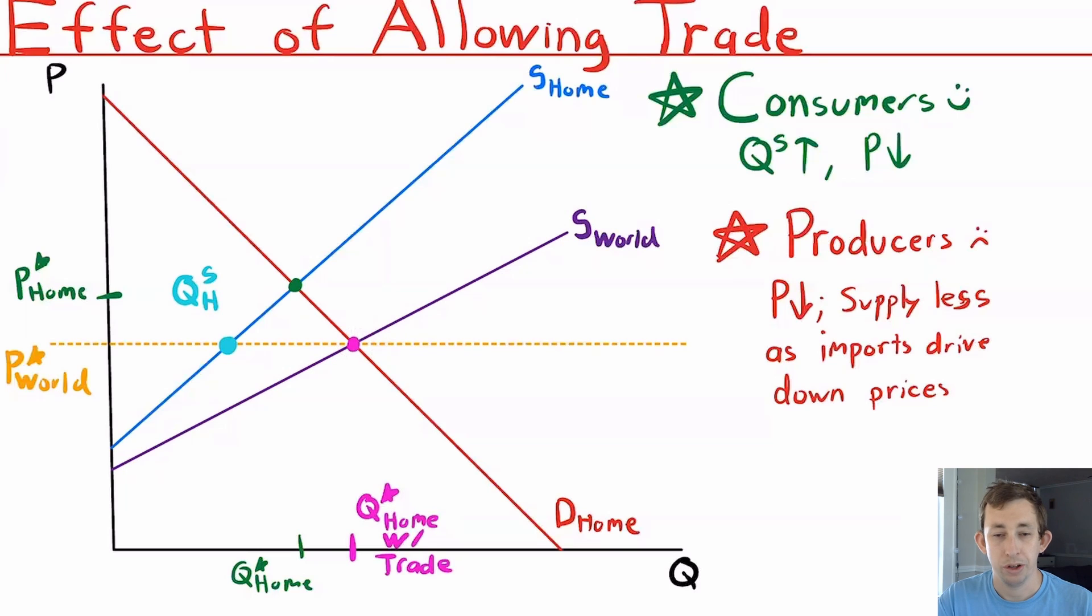So if we're thinking about consumer and producer welfare, both with and without trade, when we add trade, consumers are going to be happier because generally the price goes down. And so if the price goes down, their consumer surplus is going up. Producers tend not to be so happy about this because the price goes down, so they're supplying less because imports are now coming in and imports are generally cheaper.